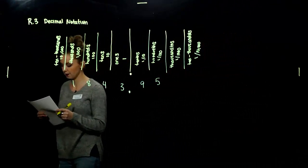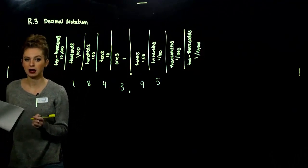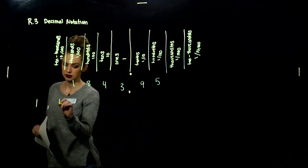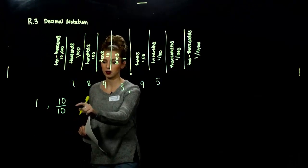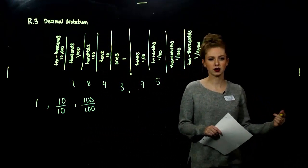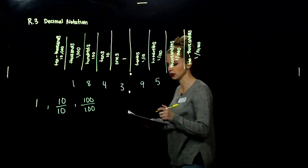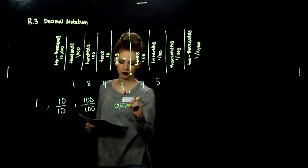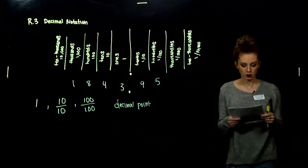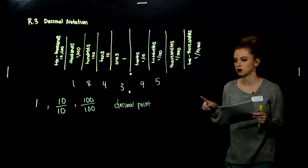We can multiply any number by one without changing the value — just changing what it looks like. We talked about this in the last two sections: one can take many different forms, for example ten divided by ten, hundred divided by a hundred, thousand by a thousand. Same thing divided by the same thing is always one. So we can move a decimal point — we can move it in the numerator to the right to convert from decimal notation to fraction notation, and we can also go backwards, vice versa.